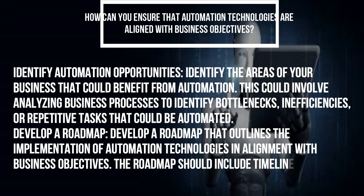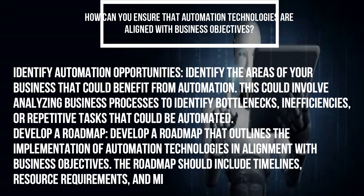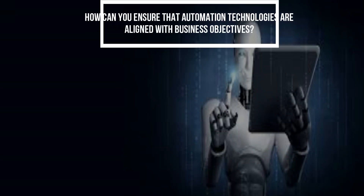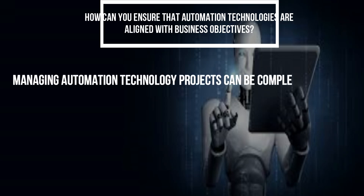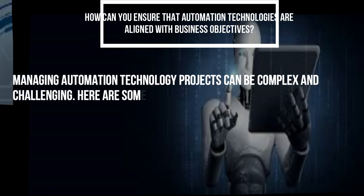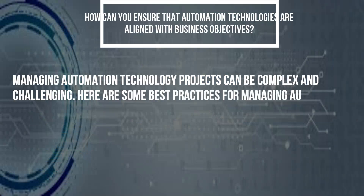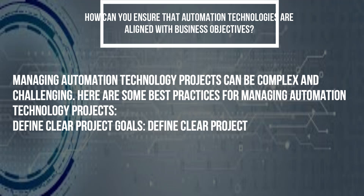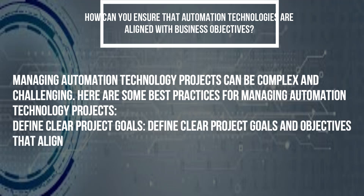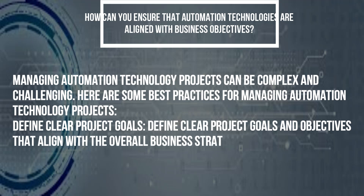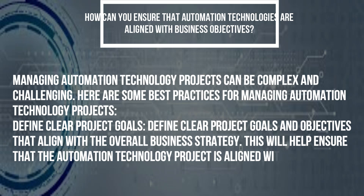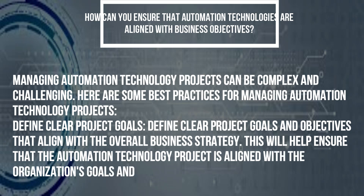The roadmap should include timelines, resource requirements, and milestones. Managing automation technology projects can be complex and challenging. Here are some best practices: define clear project goals and objectives that align with the overall business strategy. This will help ensure that the automation technology project is aligned with the organization's goals and objectives.